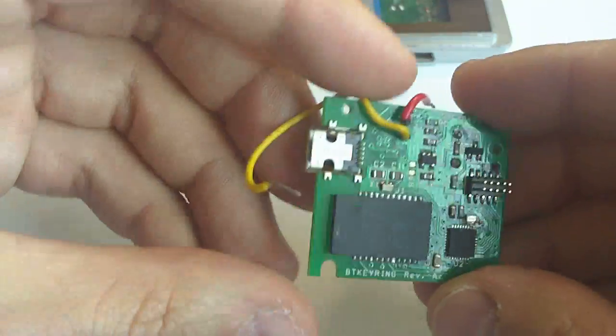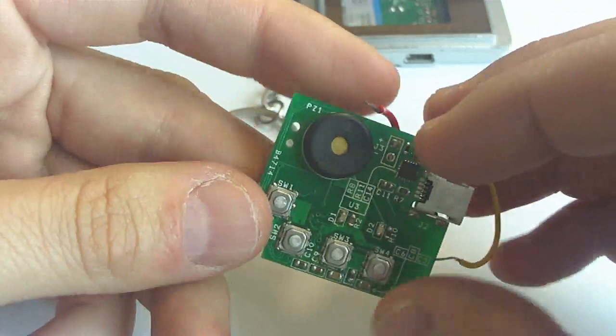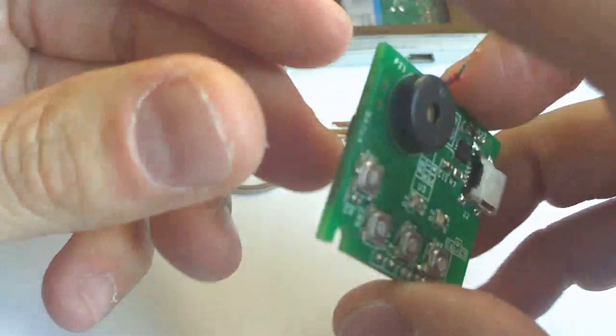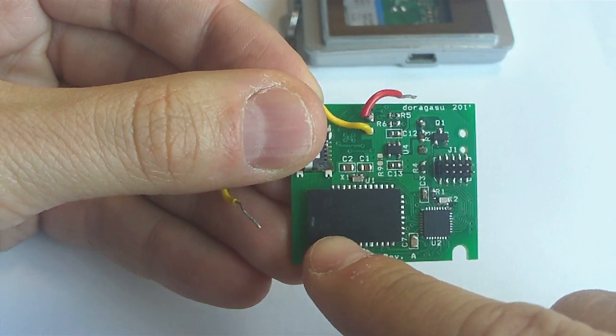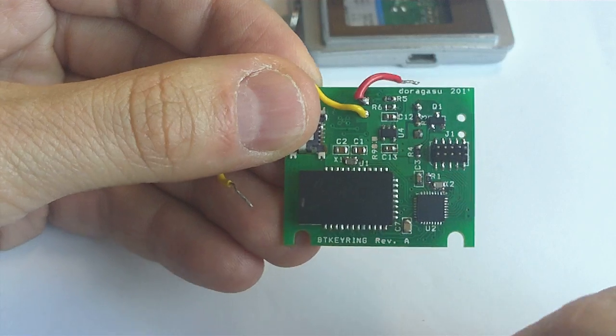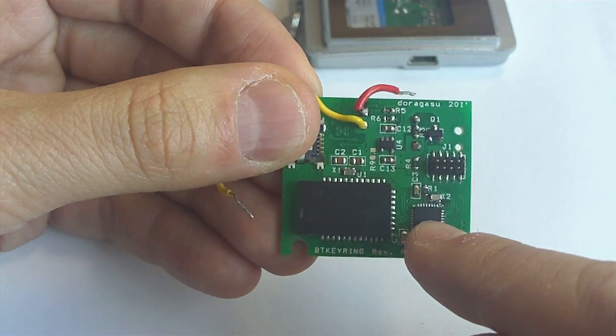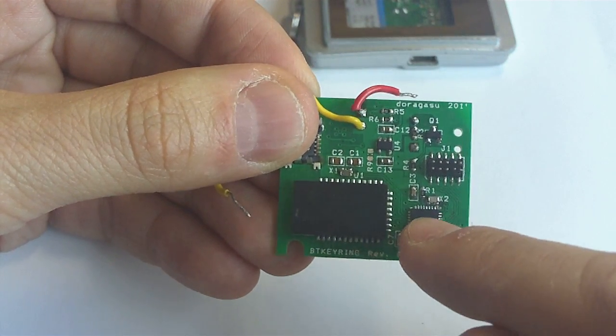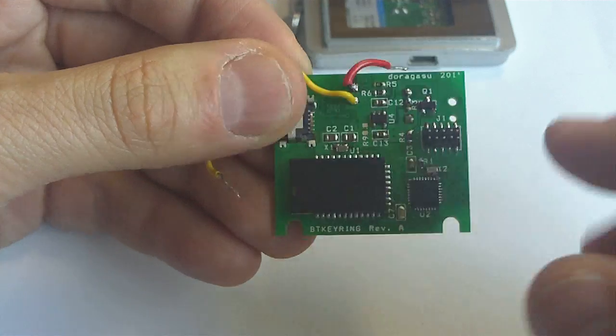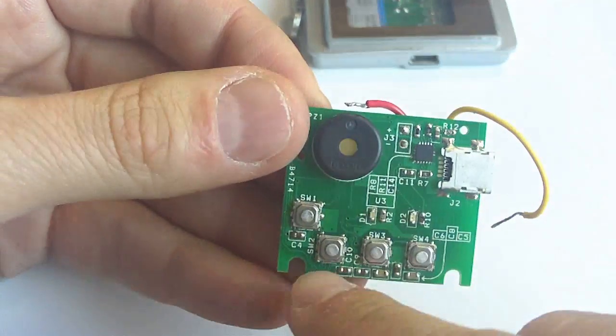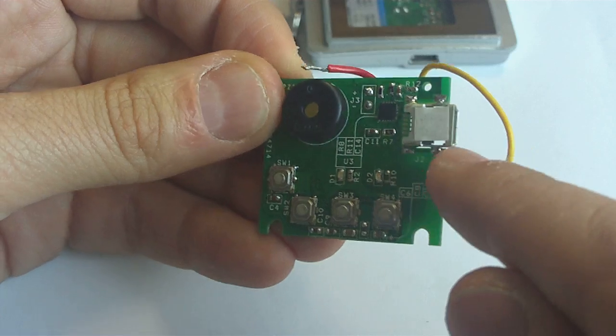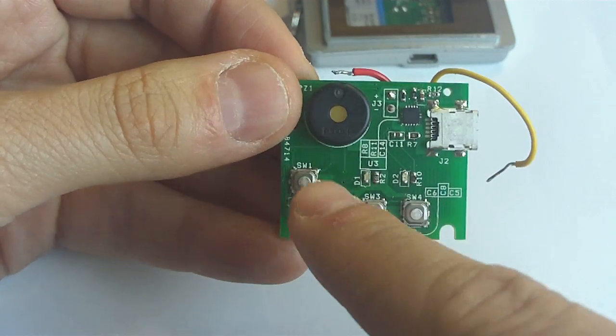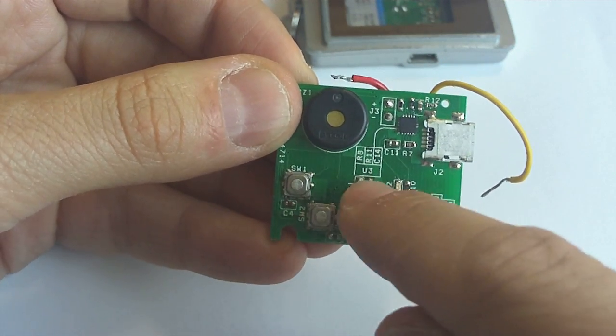This is the PCB inside the keychain. It has a Bluetooth interface with its internal aerial, an MSP430 microcontroller, a very low power microcontroller, a buzzer, a battery charger near the USB port, some switches, and two LEDs.